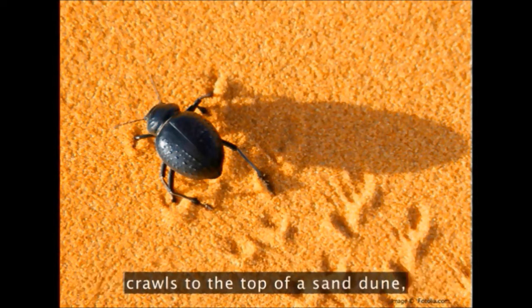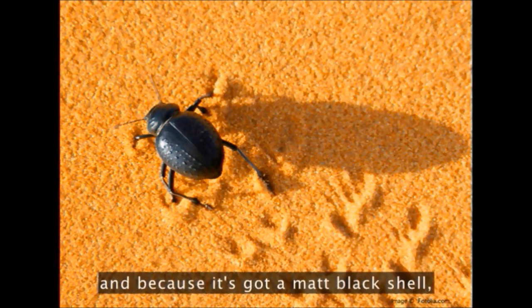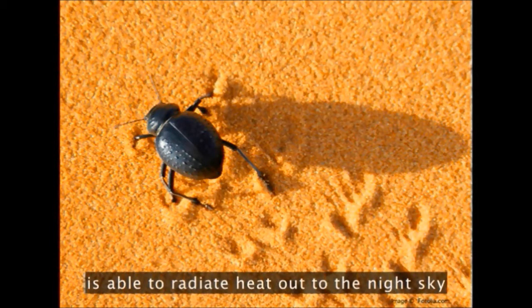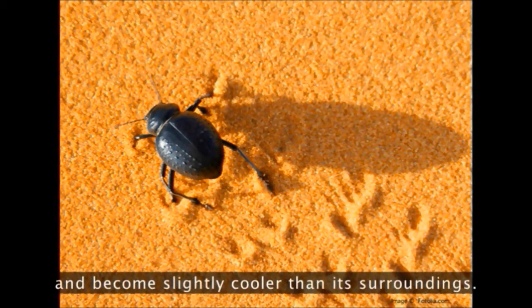The way it does this is it comes out at night, crawls to the top of a sand dune, and because it's got a matte black shell, it's able to radiate heat out to the night sky and become slightly cooler than its surroundings.